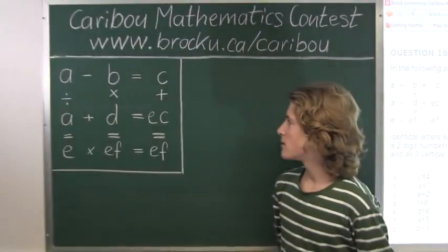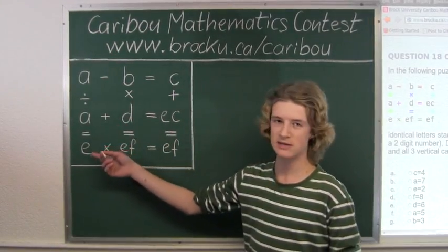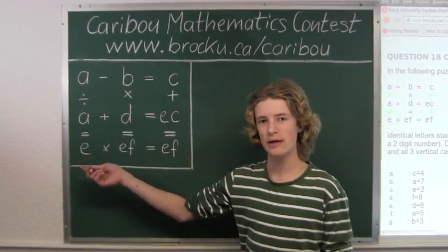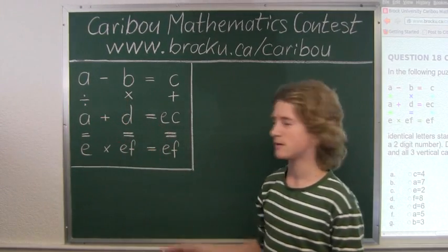So the first thing you will see here is in the first column, A divided by A equals E. Well this is easy, we know E has to equal 1, because a number divided by itself is 1.